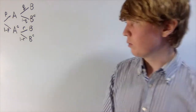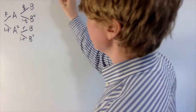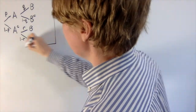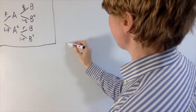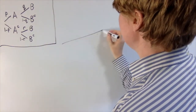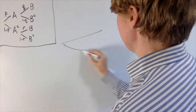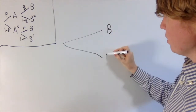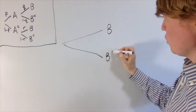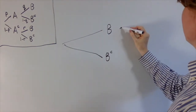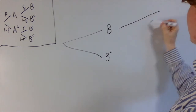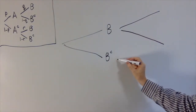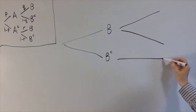Given this information and these probabilities, what we're going to be interested in is: can we draw a new tree diagram so that B is decided first, and then we want to set this up so that we can work out the probability of A next.